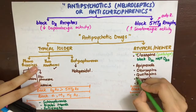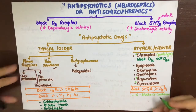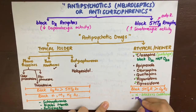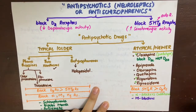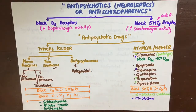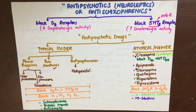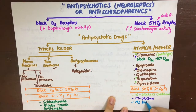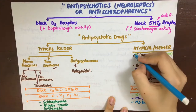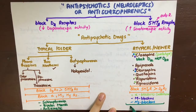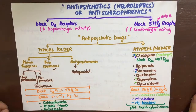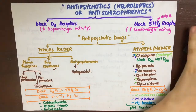Antipsychotics also have alpha, muscarinic, and H1 blockade. Among these drugs, those with alpha-blocking activity, muscarinic-blocking activity, and H1-blocking activity can be distinguished, though this differentiation is not very specific and can vary from book to book. The atypical antipsychotics are used for the same purposes as the typical ones — schizophrenia, bipolar disorder manic phase — and also find use in Huntington's chorea.